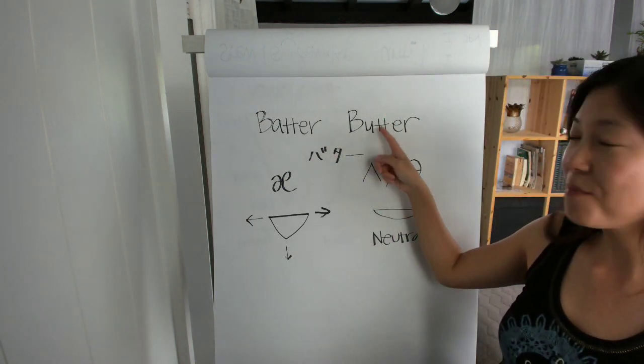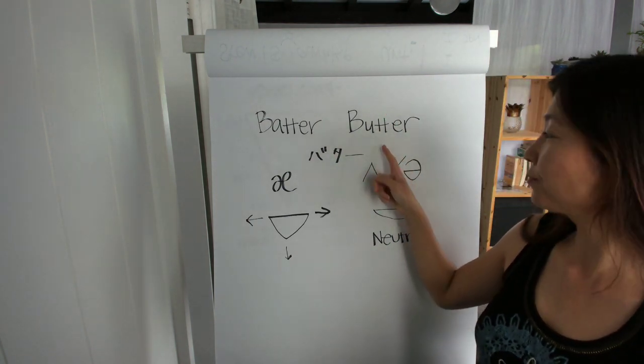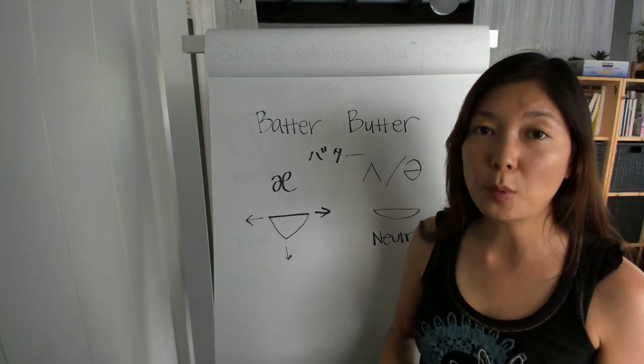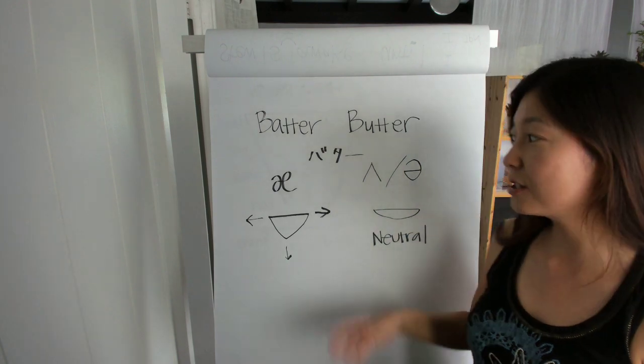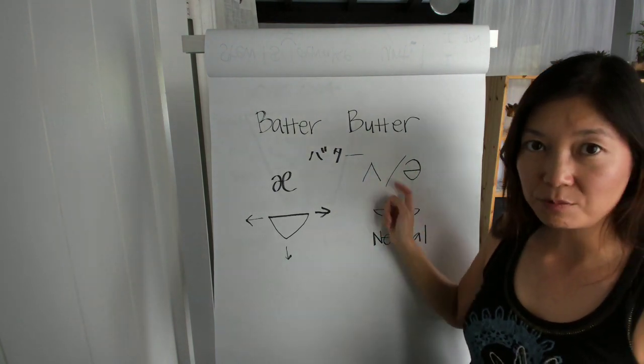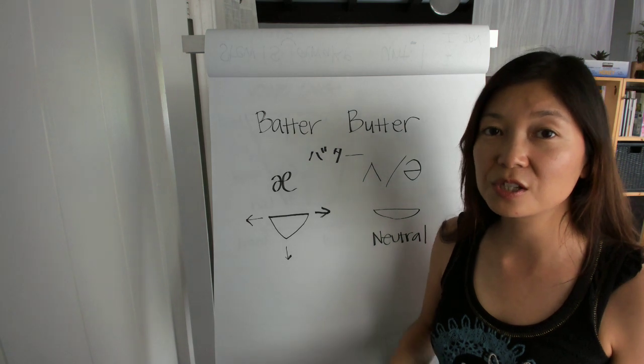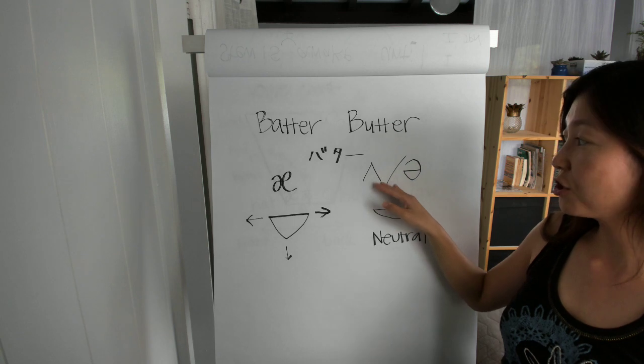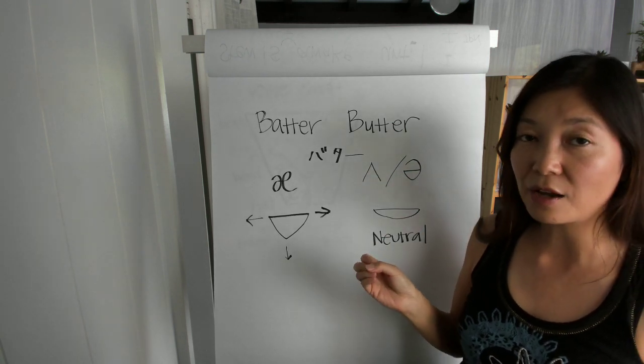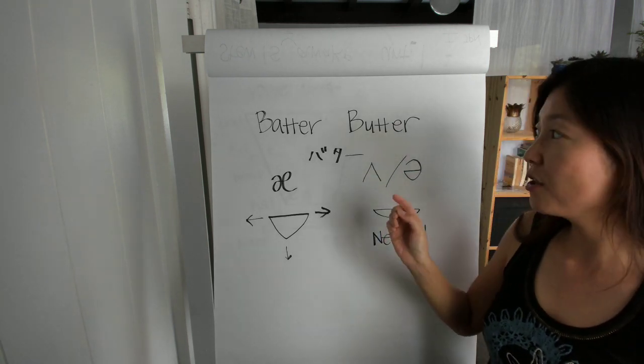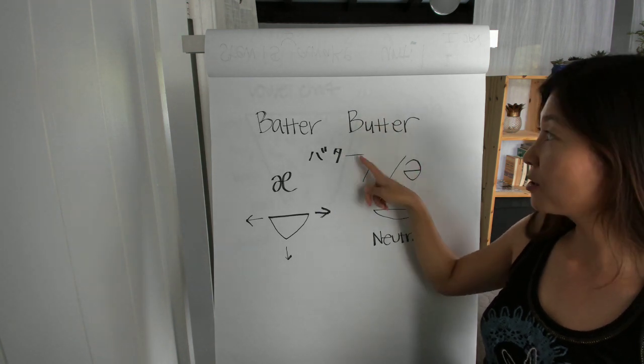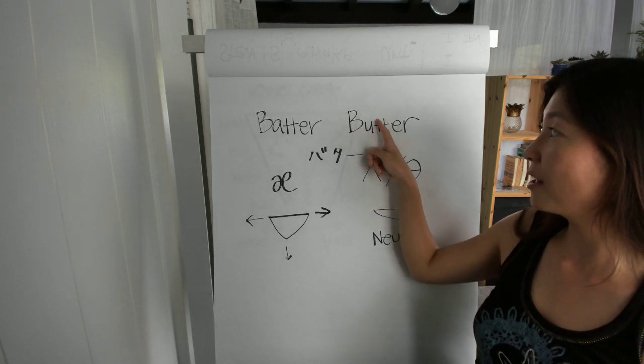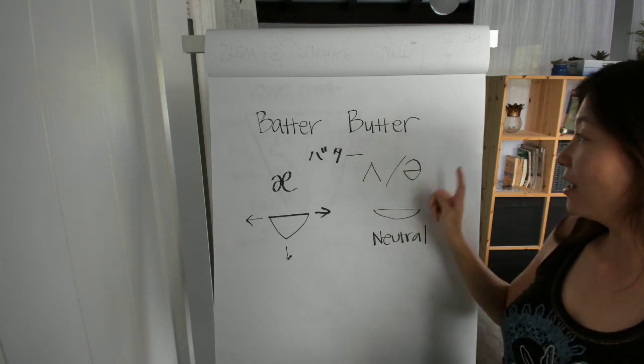And for this one, B-U-T-T-E-R, the vowel is called schwa, which is really important in American English because you're going to see this vowel everywhere. It's the most used vowel. The pronunciation symbol - there are actually two - and this one is like an upside-down V. That's when you have a stress on the syllable. So for 'butter', this one is used right here on this syllable. And if you don't have stress on the syllable, this one is used.